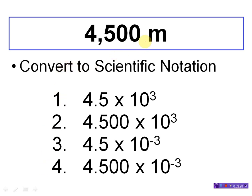In scientific notation, I'm taking my decimal point and putting it right between the first two numbers. When I do that, I'm moving it one, two, three places over. So my exponent is going to be times 10 to the third or 10 to the negative third. Big first question: is 4,500 greater than one, or is it less than one? For a number that's greater than one, it must be a positive exponent. That means the negative three options are eliminated. A negative three exponent would be a number less than one, like 0.45 or 0.0045 — that would be an example of a negative exponent.